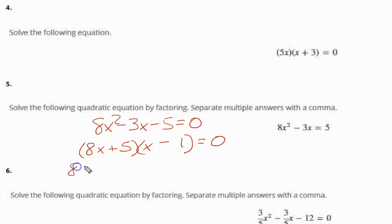So, again, the protocol: 8x plus 5 equals 0, or x minus 1 equals 0. Here, we're going to transpose the 5. That gives us negative 5. And we're going to divide by 8. So, x equals negative 5 eighths. Here, just transpose: x equals 1.